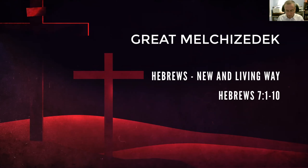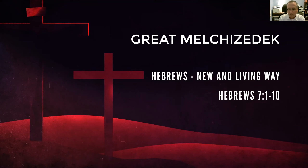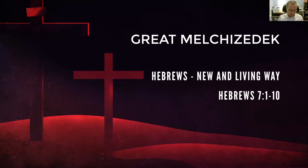Return your Bibles to Hebrews chapter 7. We're going to pick up at the point we left off with last week, starting in verse 1. We're going to be looking today at the symbol of Melchizedek. The author has introduced him a couple of times previously — back in chapter 5, verse 10, where he first introduced the idea of Jesus being designated by God as a high priest according to the order of Melchizedek.